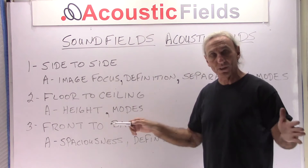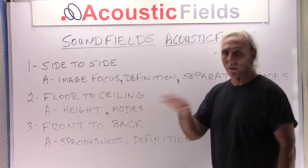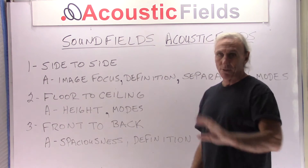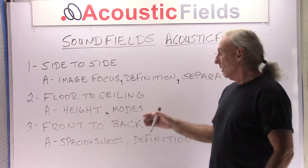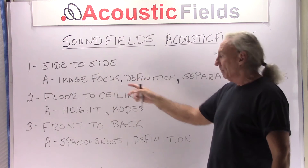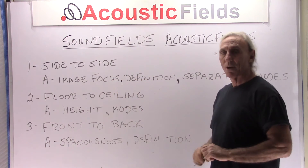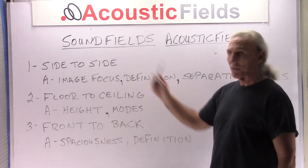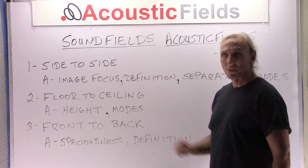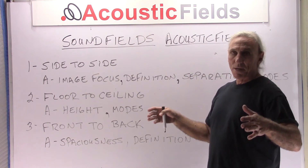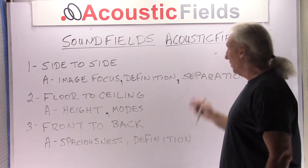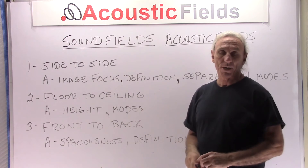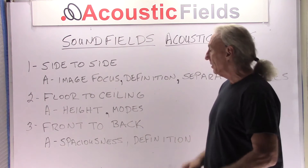First, we have side to side — side walls to side walls. We have this lateral element to our sound stage and our room, so we have energy going from side wall to side wall. What's involved in that? Well, we have image focus. When you get a strong central image in your sound stage, you have good image focus. If you have the side-to-side lateral reflections regulated and maintained, then you have definition and separation. And we always have modal issues from side wall to side wall — those are issues we have to be concerned about.